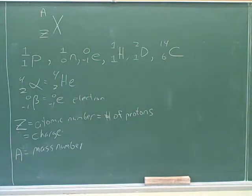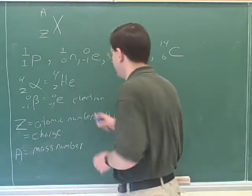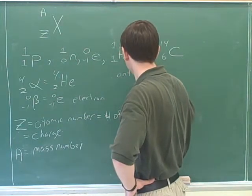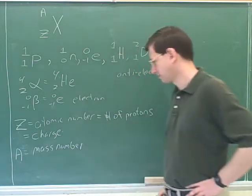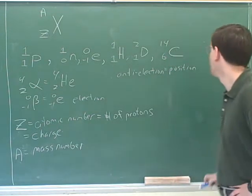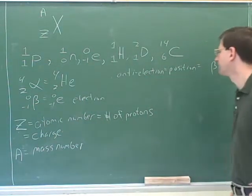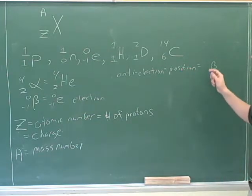Every particle also has an antimatter antiparticle. A particle and its antiparticle have the same mass but opposite charge. We need to focus on the antiparticle for an electron — the anti-electron, also called a positron. Since it's the antiparticle to a beta particle, you can also use the symbol beta for a positron.